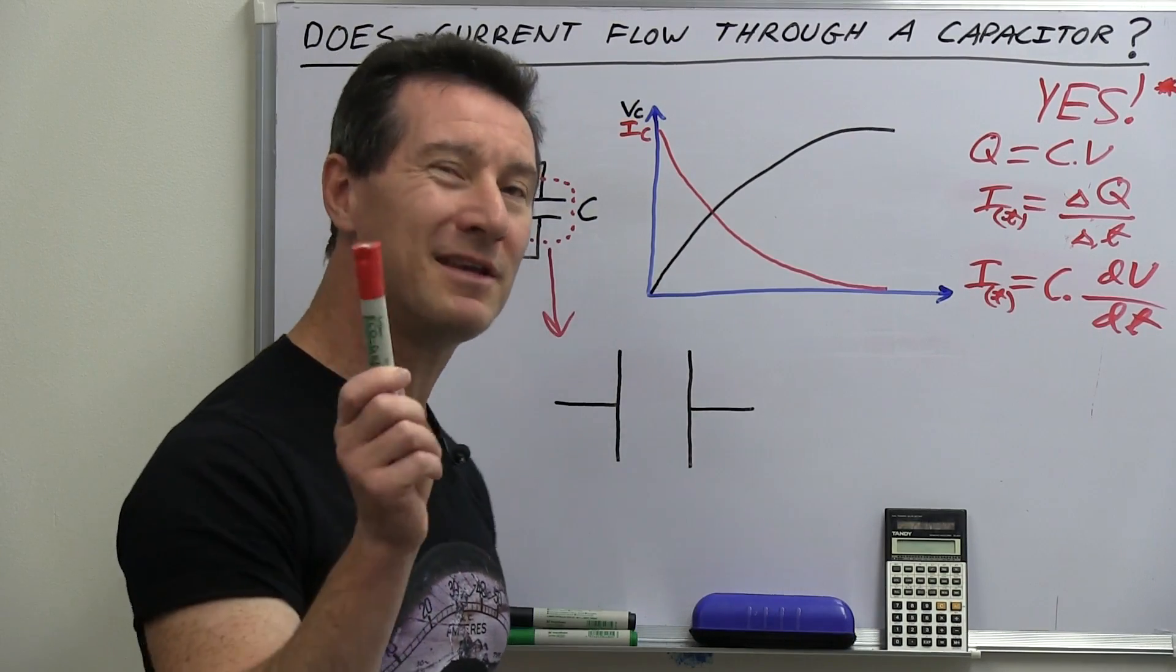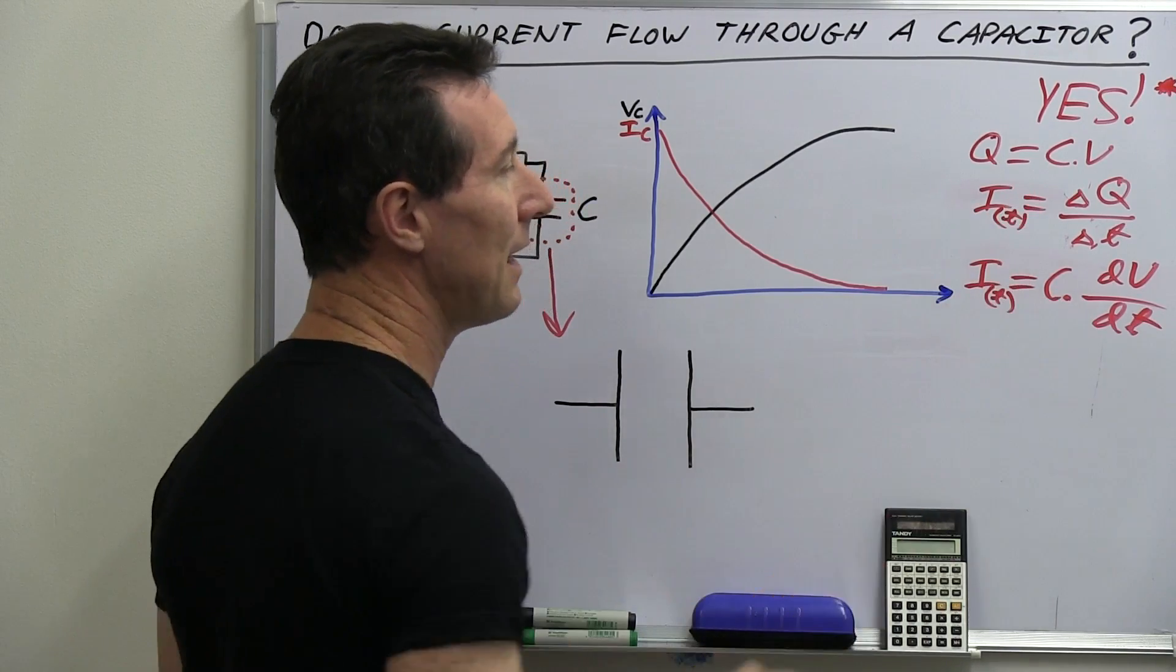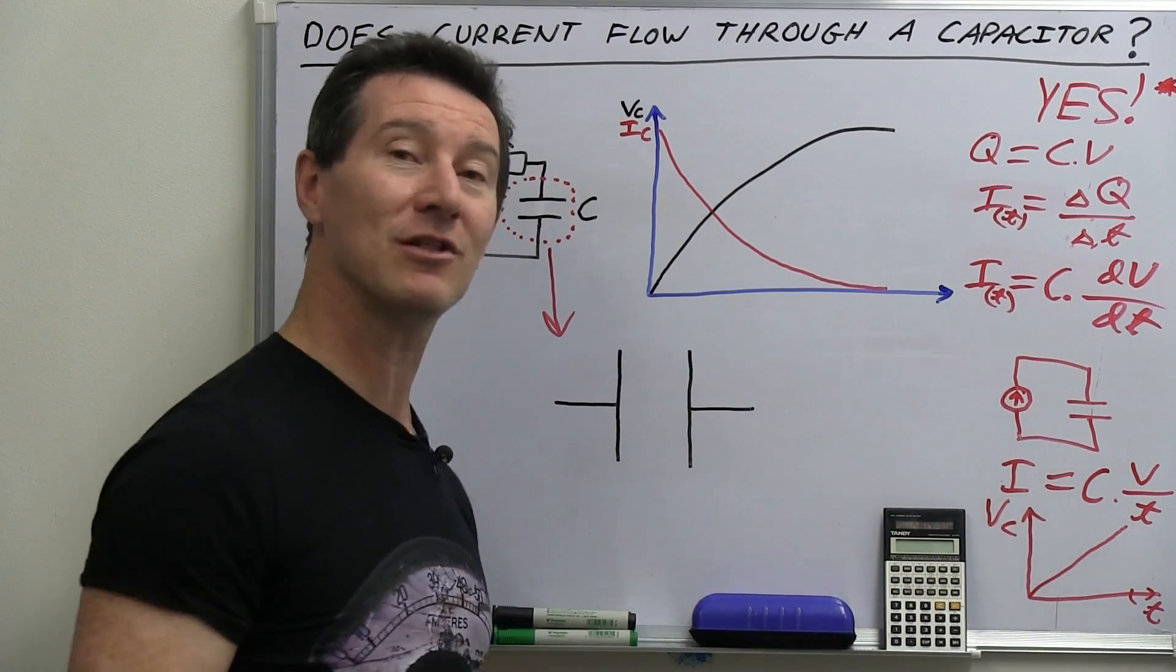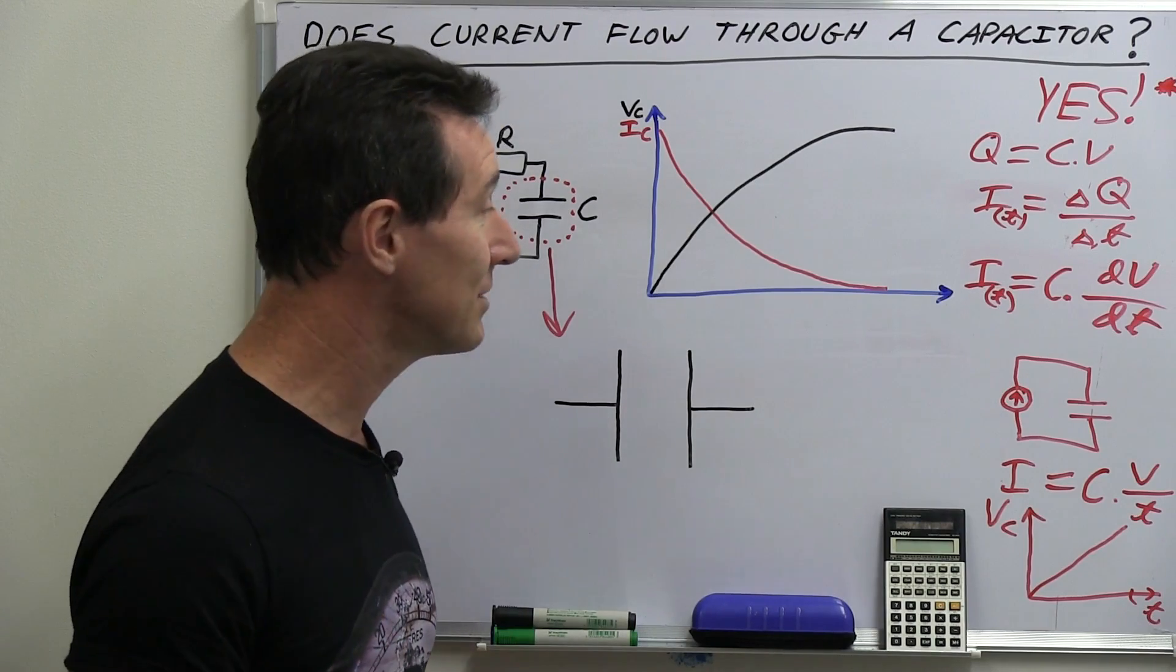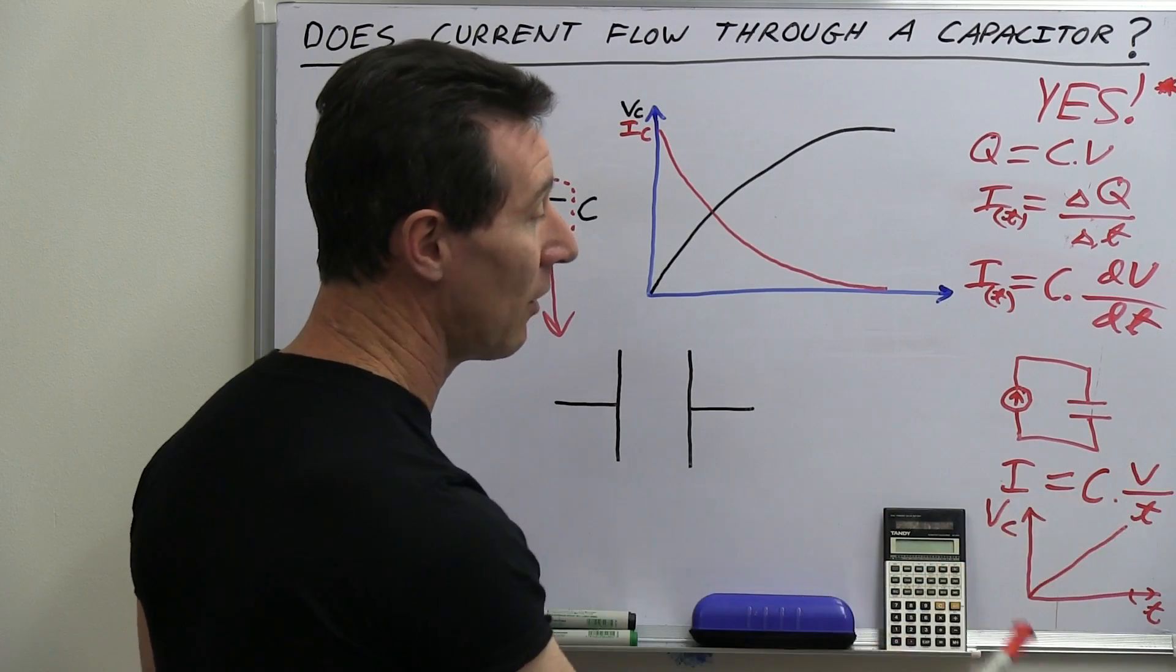And just so nobody nitpicks, yes, I know it's actually i(t) in there. I didn't add the t in there. And if you put a current source in series with the capacitor like this, which is essentially what we did in the previous video, which caused all this ruckus to begin with, then the t drops out of that, and i just equals c times v on t.